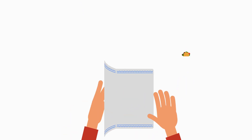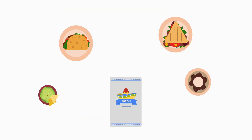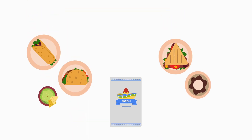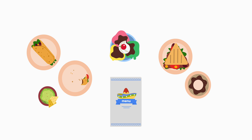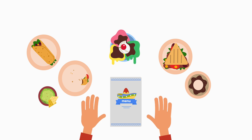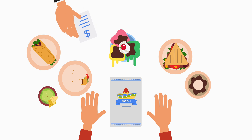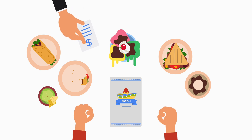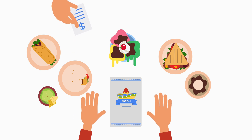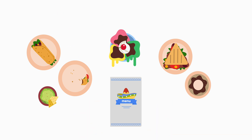A few minutes go by and the waiter comes back with every single item on the menu, including that ice cream you wanted after your meal. You end up leaving the restaurant incredibly frustrated. Half of the items on the table went to waste. You ended up paying for items you didn't order, and you didn't even have a chance to try that ice cream before it melted.